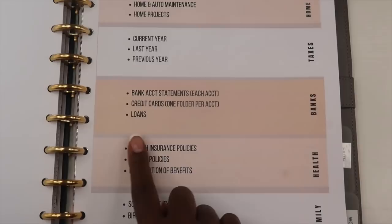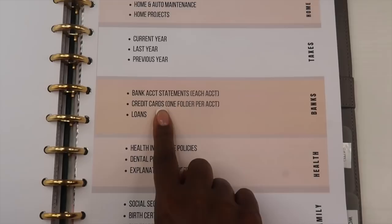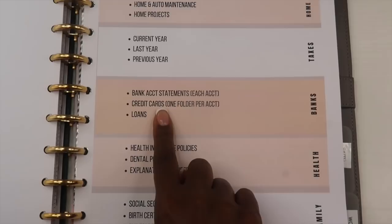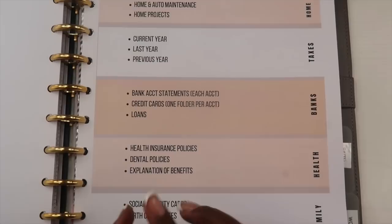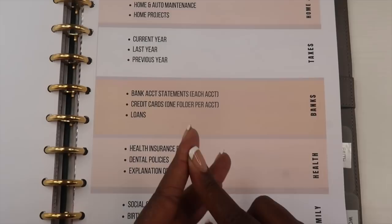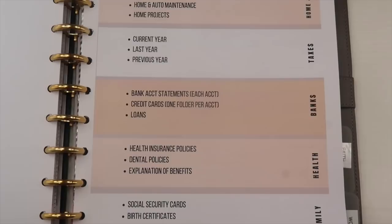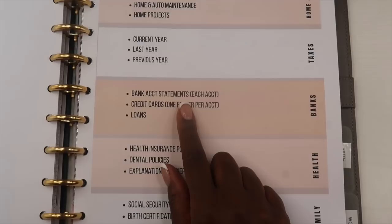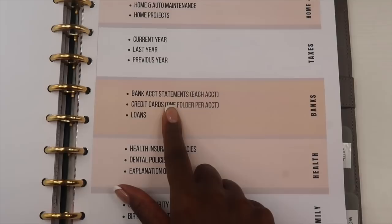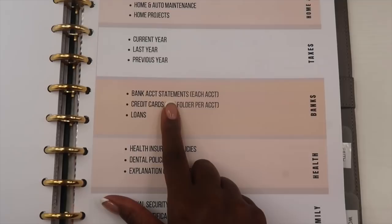In our banking folders I keep bank account statements, credit card statements, and any loan statements. I keep a folder for each account — I have five bank accounts: my spending account, bill account, business account, short-term savings account, and long-term savings account. I file statements as PDFs and print them from time to time. This also helps with financial planning, because after a while you can't print a bank statement from the bank since it gets archived.